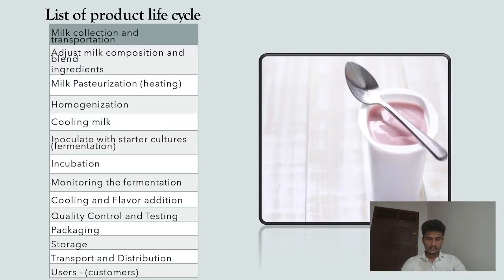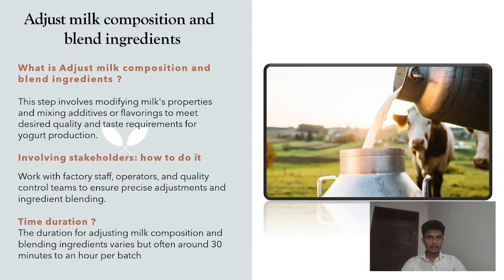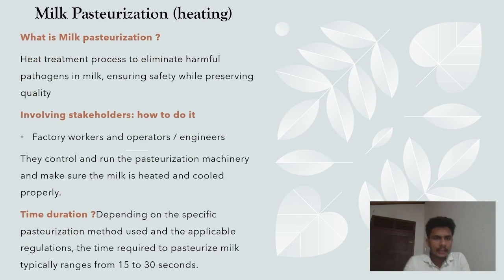Task one is to identify key life stages in yogurt production. There are 13 key life stages in yogurt production. Note that the manufacturing process itself is considered out of boundary. The first key stage is adjusting milk composition and milk integration — this stage mainly involves modifying milk's properties and mixing in additives for flavoring to meet desired quality, taste, and requirements for yogurt production.